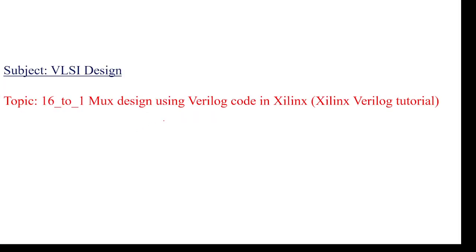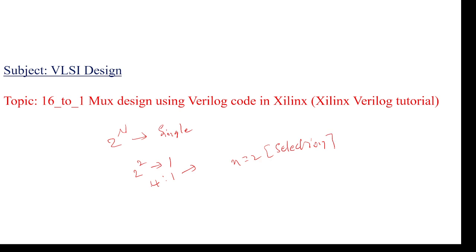I am going to explain about 16 to 1 multiplexer design using Verilog and Xilinx. A MUX means many to one — it has 2^n input lines to a single output, which is called a multiplexer. Here n indicates the selection lines. For example, if n equals 2, that means 4 input lines to 1 output line. Similarly, if n equals 3, you get an 8 to 1 MUX.